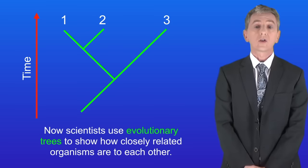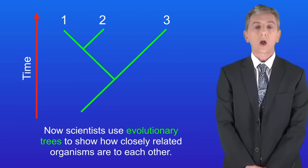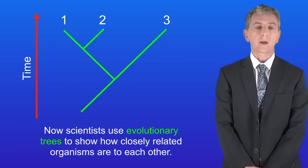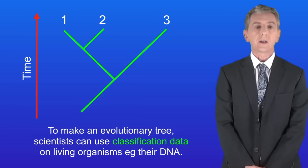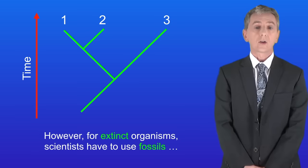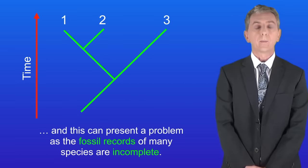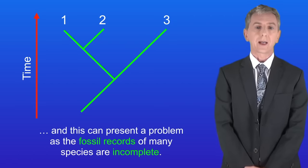Now scientists use evolutionary trees to show how closely related organisms are to each other. To make an evolutionary tree scientists can use classification data on living organisms, for example their DNA. However for extinct organisms scientists have to use fossils and this can present a problem as the fossil records of many species are incomplete.